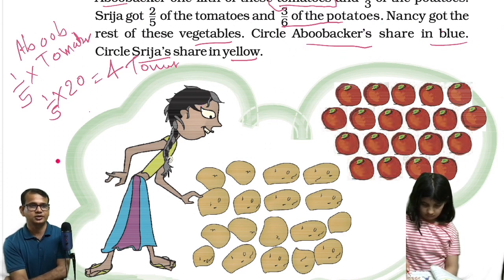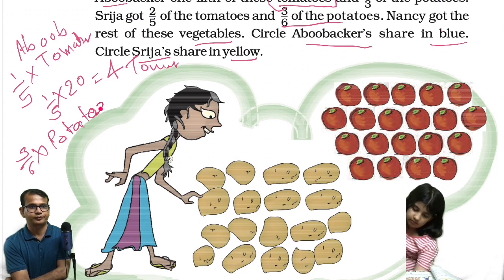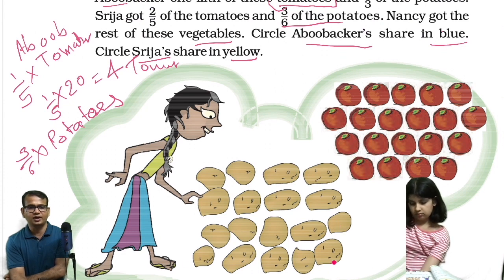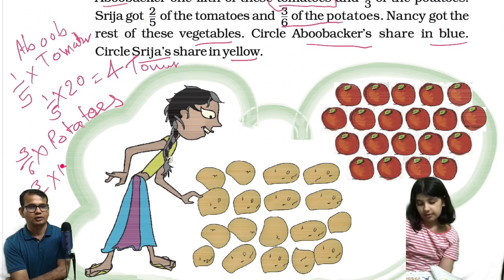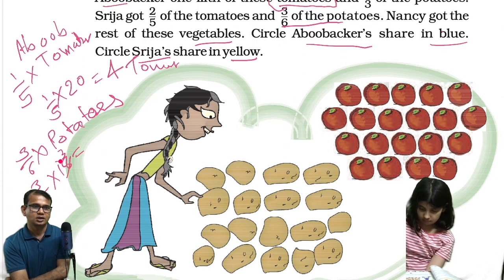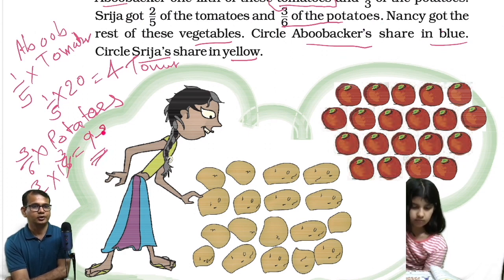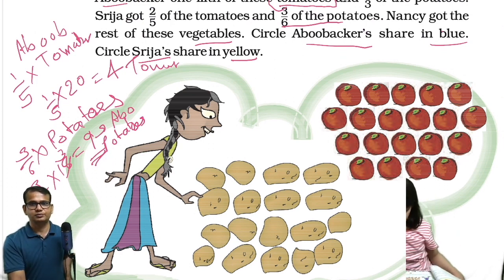Three sixth of the potatoes for Abu Bakar. How many potatoes are there? Four here and four here — four plus four is eight, eight plus five is thirteen, thirteen plus five is eighteen. So total eighteen potatoes. Eighteen by six: six threes are eighteen. And three multiplied by three is nine. So nine potatoes go to Abu Bakar. First portion completed.